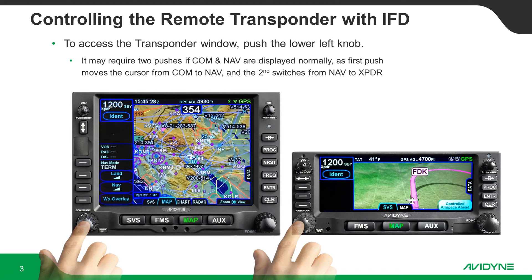When properly configured, you can access the transponder window by pushing the knob on the lower left — that's the same knob that switches between COM and NAV. It may require two pushes because the first will move the cursor from the standby COM down to the standby NAV, and then pushing it again will take you to the transponder window. The same is true on the 4 series.